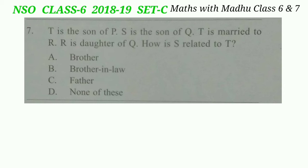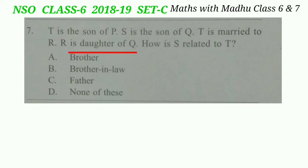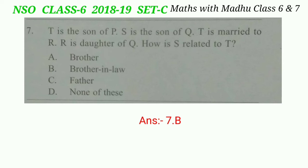Question 7: T is the son of P, S is the son of Q, T is married to R, and R is the daughter of Q. How is S related to T? T is married to R, so R is the wife of T. R is the daughter of Q and S is also the son of Q, so S is the brother of R. Therefore S is the brother-in-law of T. Our answer is option B: brother-in-law.